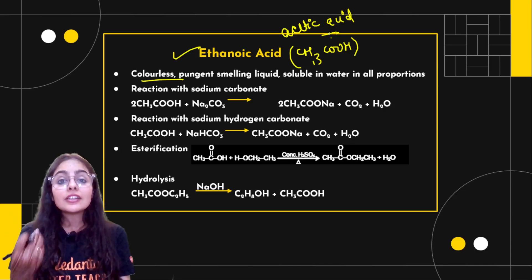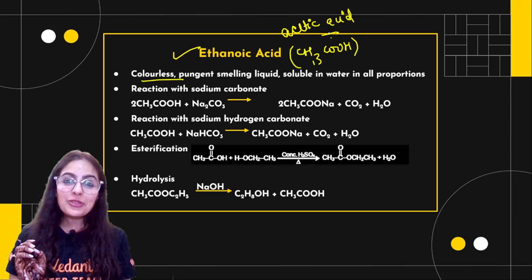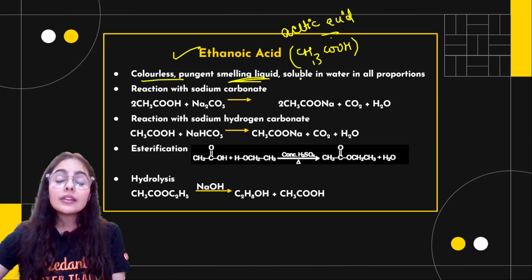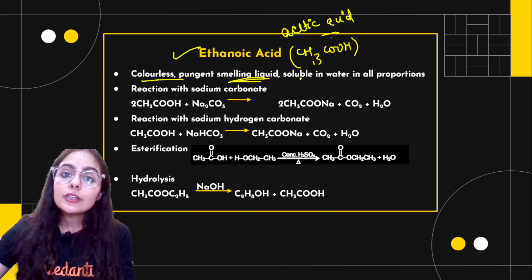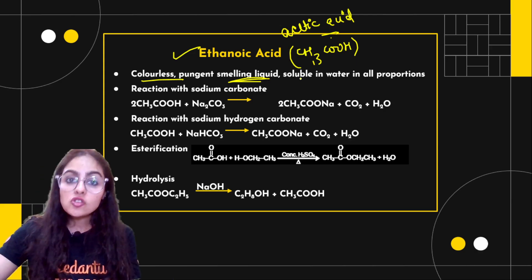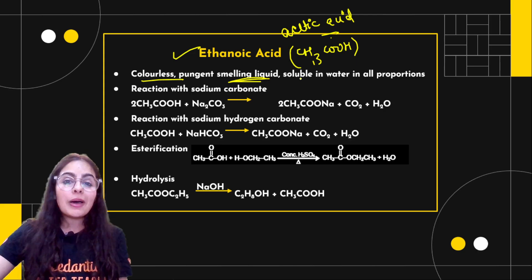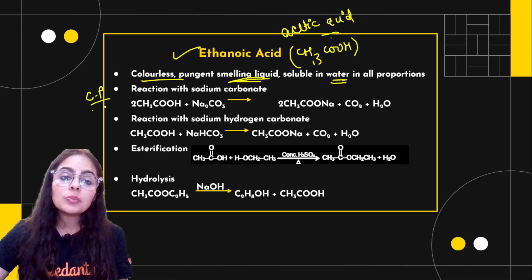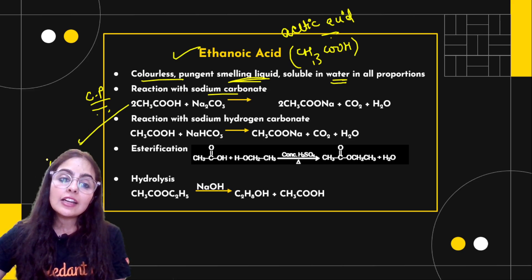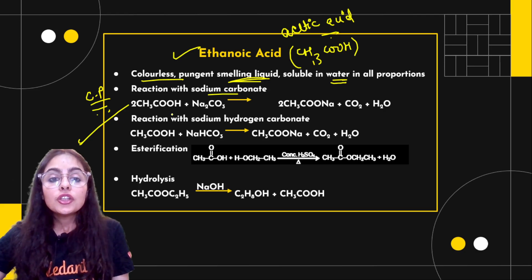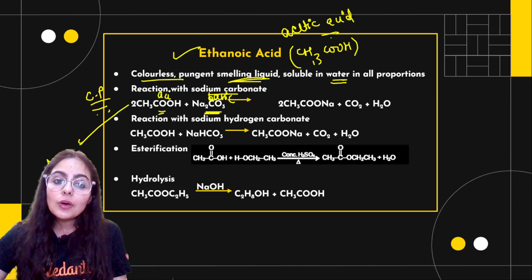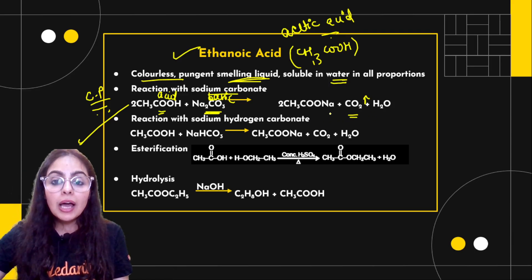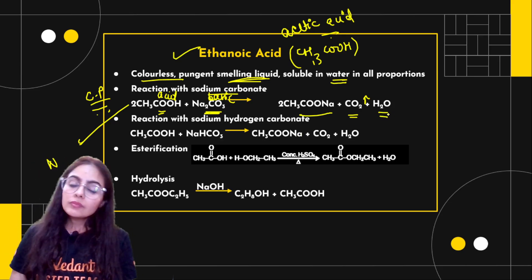Ethanoic acid — also known as vinegar — has a very strong smell when concentrated, and a different smell when diluted. It is used as vinegar. For its chemical properties: reaction with sodium carbonate is a type of neutralization reaction because sodium carbonate is basic and ethanoic acid is acidic. The products are carbon dioxide, sodium acetate, and water.